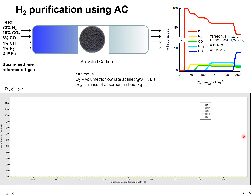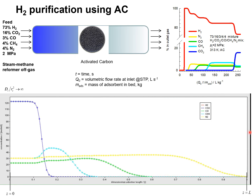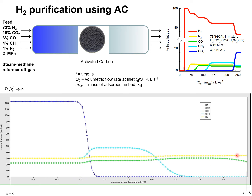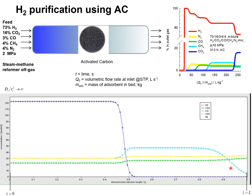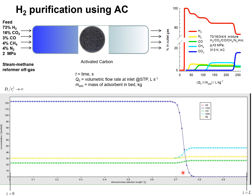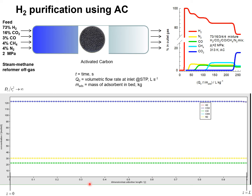Let's have a look at the animation of the transient breakthrough. Hydrogen is the component that breaks through the earliest, followed by nitrogen, followed by carbon monoxide, then methane, and CO₂ is the last component that traverses the length of the bed from zero to length L.